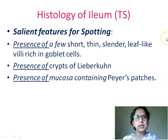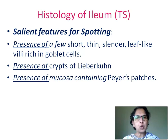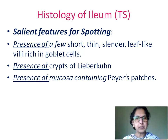The salient features for spotting a slide of histology of ileum transverse section will be: presence of a few short, thin, slender, leaf-like villi rich in goblet cells, presence of crypts of Lieberkühn, and presence of mucosa containing Peyer's patches.